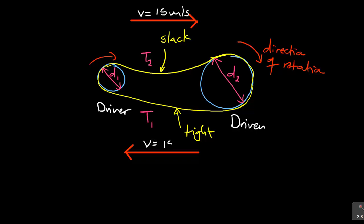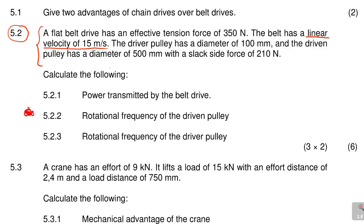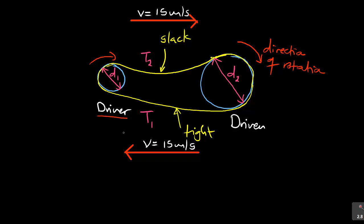They also told us that kilo means multiply by 10 to the power 3, micro by 10 to the power negative 6, and nano by 10 to the power negative 9. Coming back to the problem: the slack side force is 210 Newtons. When dealing with belts, force means tension. The slack side is T2, so T2 = 210 Newtons. We are not given T1 directly.